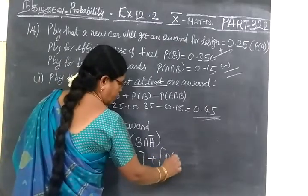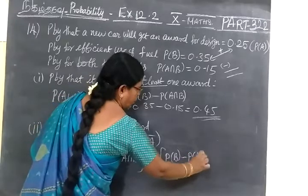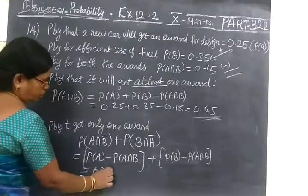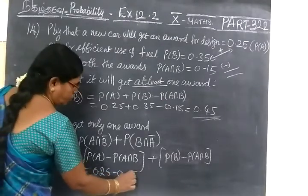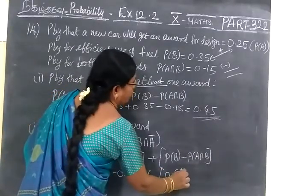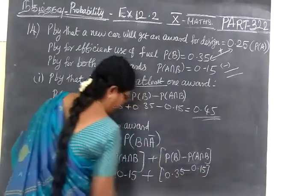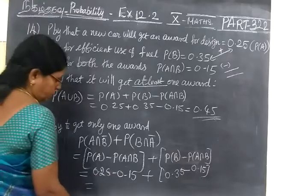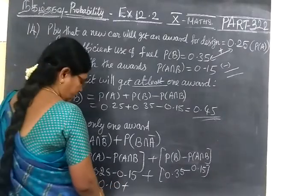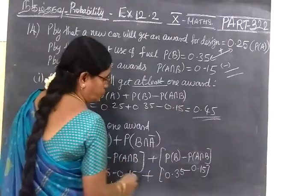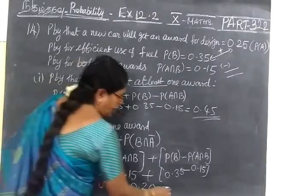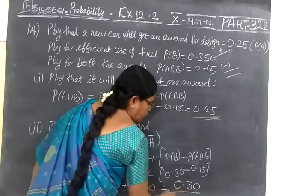So this is equal to P(A) is 0.25, A ∩ B is 0.15, plus P(B) 0.35 minus 0.15. So 25 minus 15, you should write that 0.10. Then 35 minus 15 is 20, that means 0.20. If you add it, you get 0.20 or 0.30.